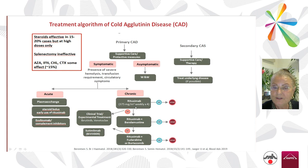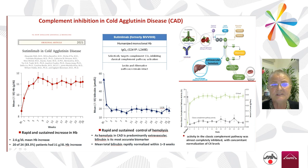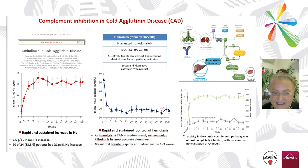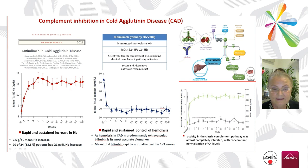In chronic forms, rituximab is effective but not as effective as in warm forms. The combination with bendamustine or fludarabine increases efficacy but worsens side effects, so clinical trials are encouraged. The very nice recently published results with complement inhibition show that this is a main mechanism in this disease. Sutimlimab is a humanized monoclonal antibody directed against C1s; its administration clearly improves hemoglobin quickly, lowers bilirubin and other markers of hemolysis, and completely inhibits the classic complement pathway.